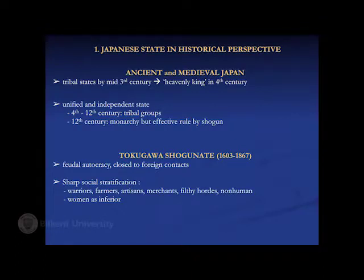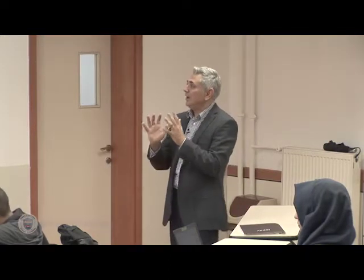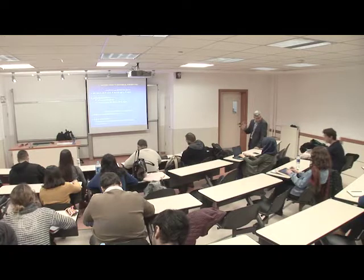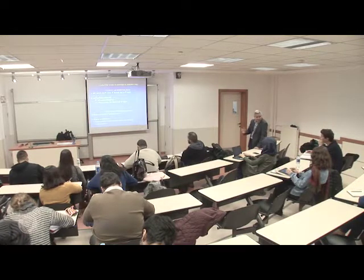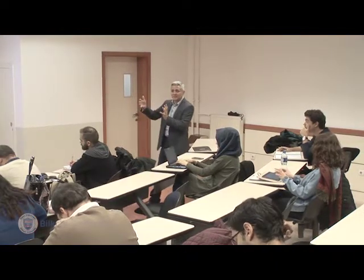Let's talk about ancient and medieval Japan. We have tribal states from the mid-3rd century onwards, and the heavenly king in the 4th century, trying to consolidate Japanese lands. Japan starts to emerge as a unified and independent state from this period, for about 8 or 9 centuries — from the 4th century till the 12th century. We still have tribal groups competing for power, but from the 12th century onwards we have a monarchy, with shogunates replacing one another.